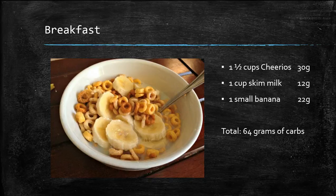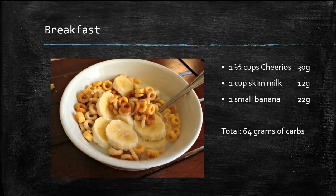This breakfast consists of one and a half cups of Cheerios, one cup of skim milk, and one small banana, totaling 64 grams of carbs.